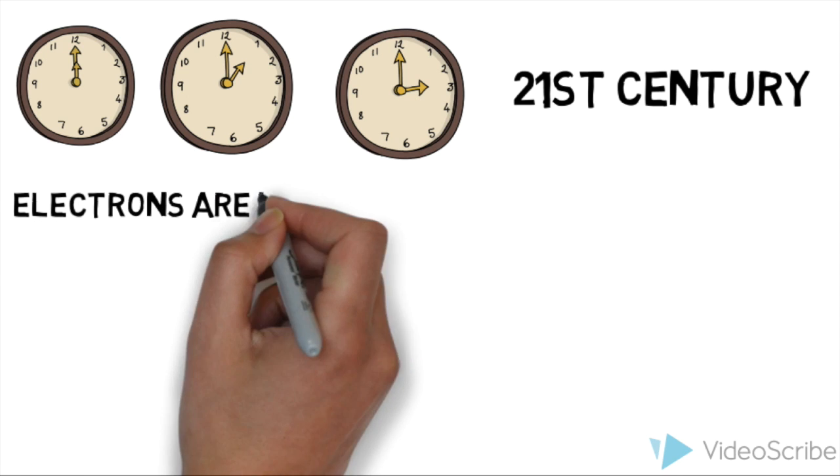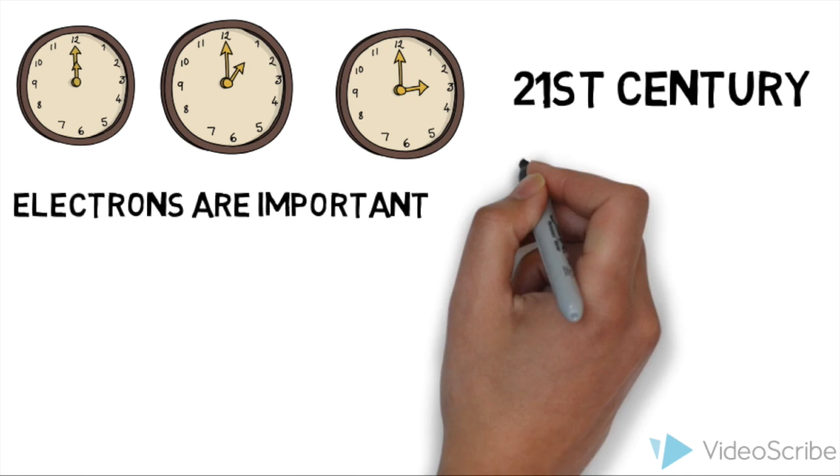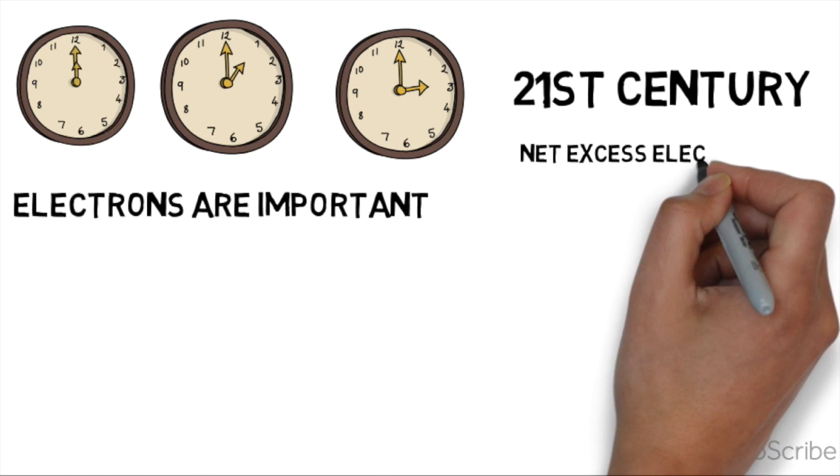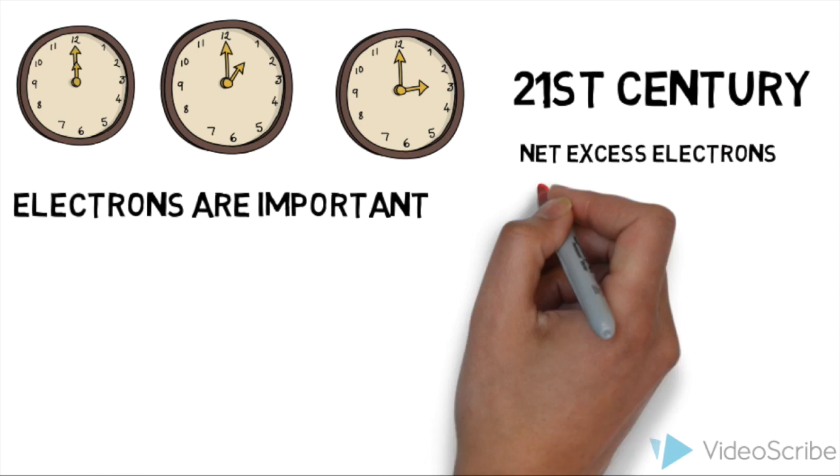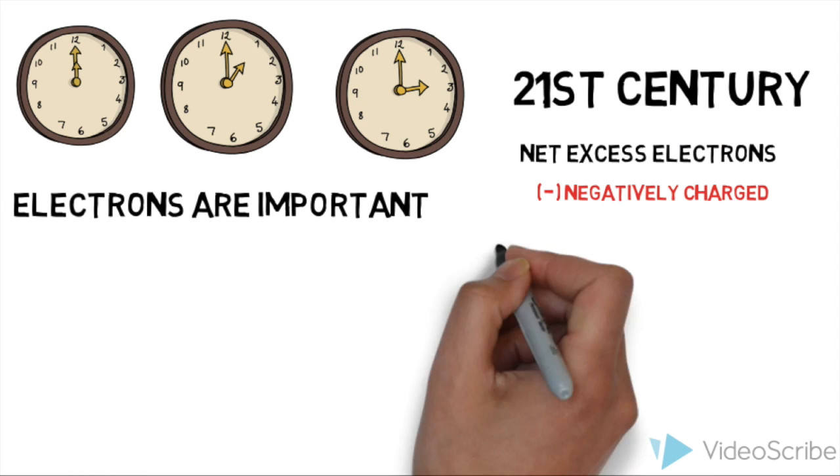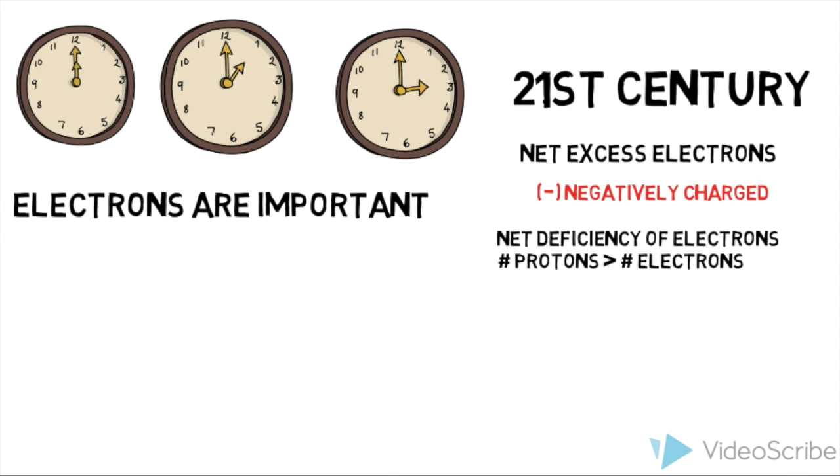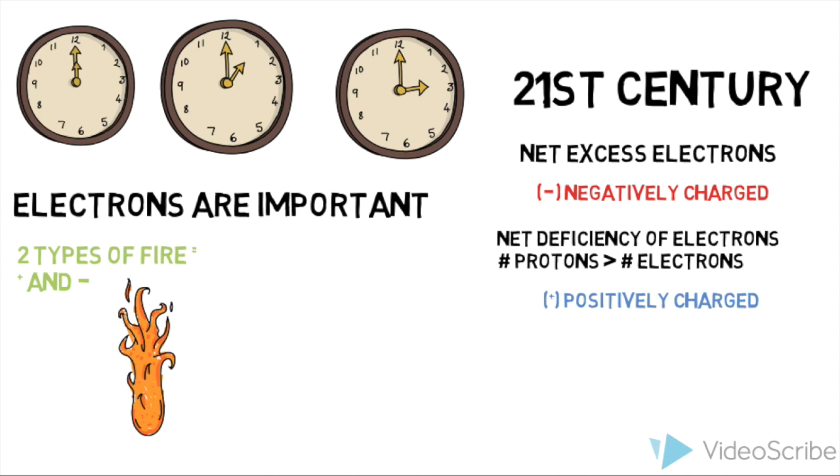We know that electrons are the important things in contributing to electrical charge. If an object has an excess of electrons, it is negatively charged. And if it has a deficiency of electrons, meaning that it has more protons than electrons, it is positively charged. There are two types of this electric fire, plus and minus.